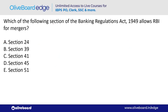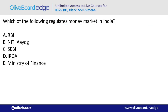Which section of the Banking Regulation Act 1949 allows RBI to approve mergers? The answer is Section 45 — option D.